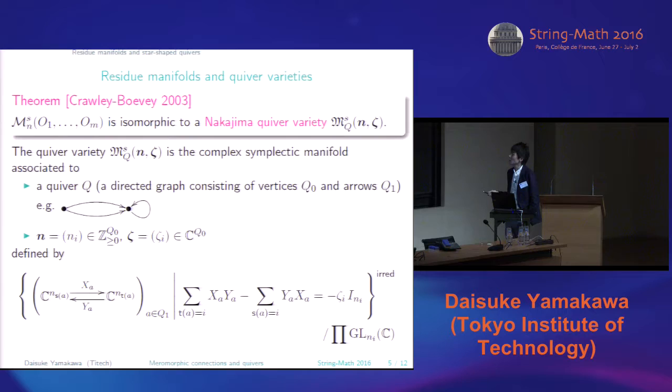But also in this case, it may be singular. So I have to take some open subset. So sometimes called irreducibility condition. Such a tuple is called irreducible if it has no non-trivial collection of subspaces, invariant by X and Y. So such reducible ones form the open subset, which is smooth, complex, symplectic manifold. And let me call it the quiver variety.